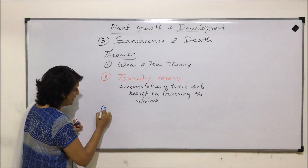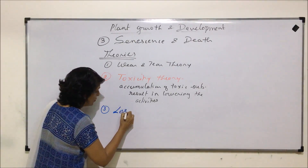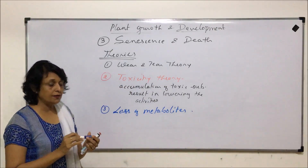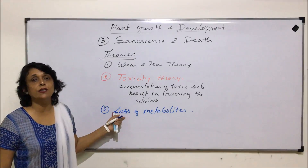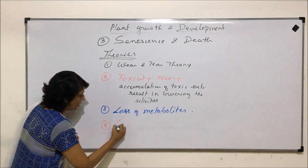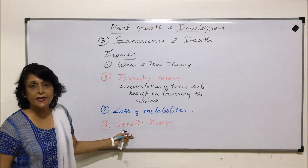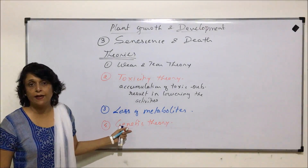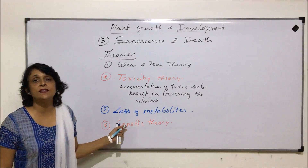The third theory indicates that there is a loss of metabolites. According to this loss of metabolites theory, important metabolic substances get reduced in their concentration in the plant tissue or plant body, and that results in senescence and finally death. The fourth theory is called the genetic theory, which is considered the most relevant and authentic explanation.